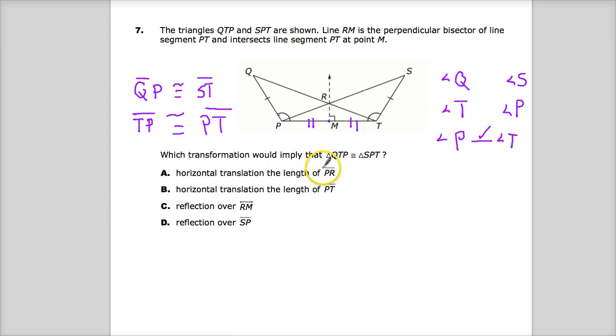A horizontal translation the length of PR. So if I went from here to here, it would move this triangle up, but if this point moves up here, I'm still dealing with something which doesn't really give me anything to show me that it's the same as this one over here. You know, they're not on top of each other. So that's out.